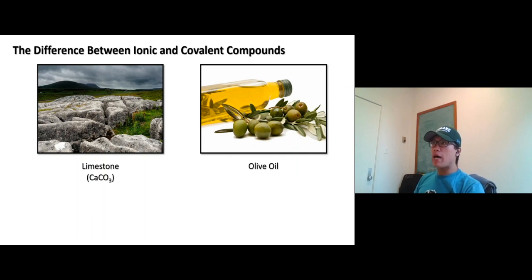Alright, so far we have learned about ionic compounds and covalent compounds. Now let's talk about the differences between these two. They have different properties. The differences in the way they form bonds—one is sharing, one is losing electrons and gaining electrons to become ions.